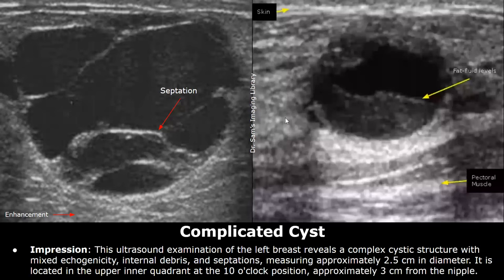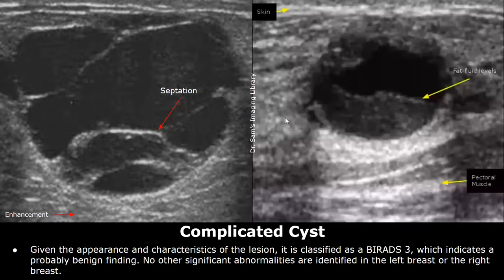Here is the impression. A complex cystic structure with mixed echogenicity, internal debris and septations, measuring approximately 2.5 cm in diameter. Then its location is written. After that, you can write the BIRADS score. For a complicated cyst, it is BIRADS 3, which indicates a probably benign finding.